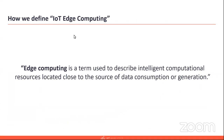The question is: what then is edge computing? The way we define it — edge computing is a term used to describe intelligent computational resources located close to the source of data consumption or generation. What's important to note here is 'close to the source' — we'll get into that in a second, as there are different types of proximity. The other part is about 'intelligent,' because we think there is an element of being nonproprietary, being open and allowing for third-party applications for things to become more intelligent.